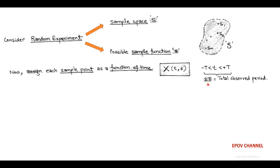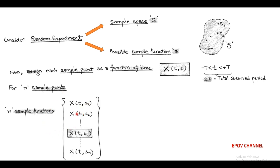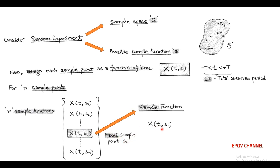Now, as we have taken n possible sample points, and corresponding to this, we have n sample functions: x(t, s1) to x(t, sn). Within these n functions, we first fix a sample point s_i, called x(t, s_i). This sample function corresponds to fixed sample point S_i and is simply written as x_i(t), where i equals 1 to n.